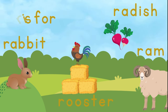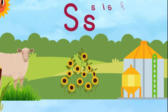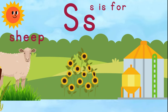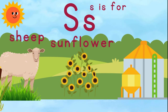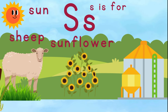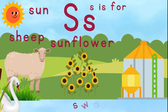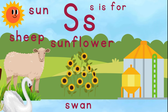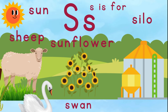This is the letter S. S is for sheep. S is for sunflower. S is for sun. S is for swan. And S is for silo.